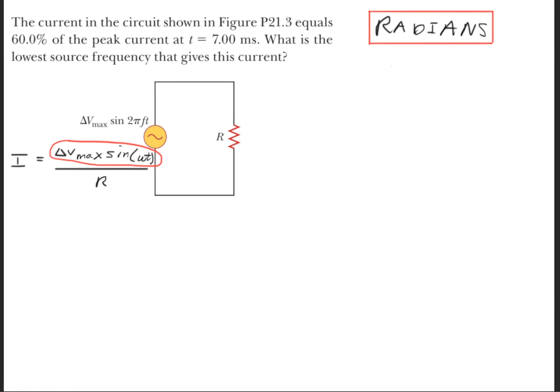Now, for alternating currents, we know that the current is equal to the maximum voltage times the sine of omega t divided by the resistance.